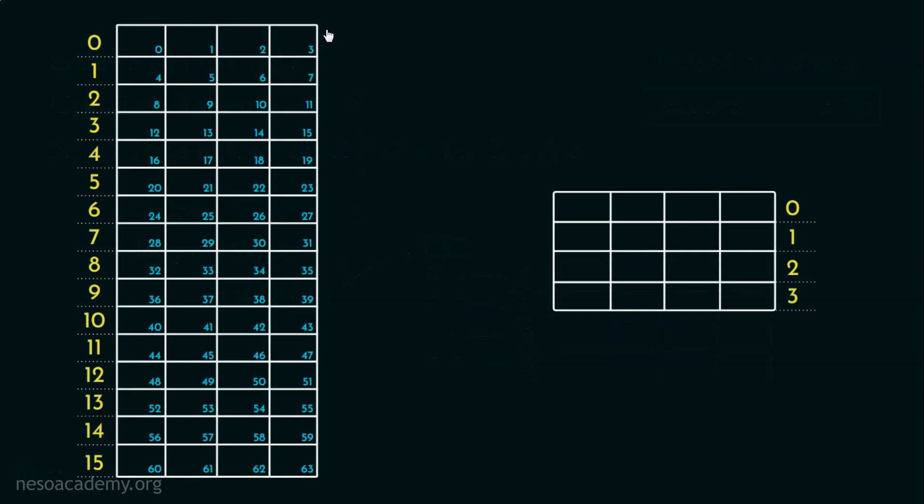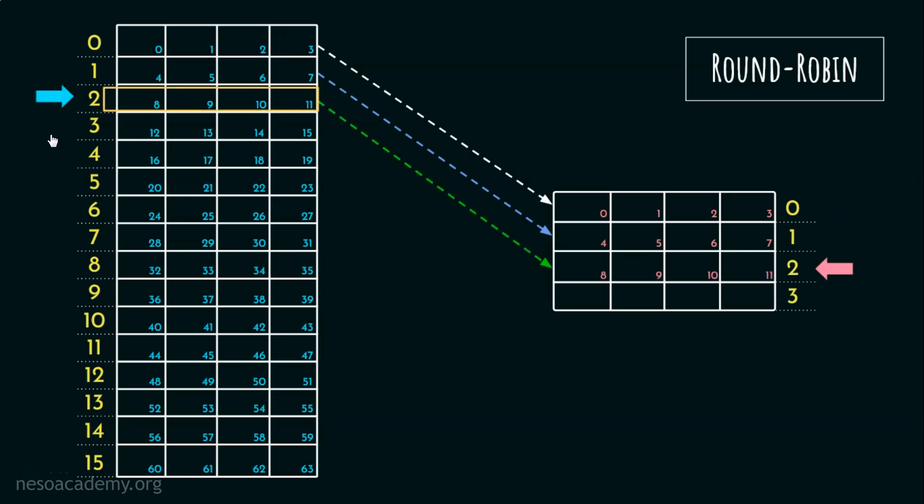It's pretty obvious that all the main memory blocks can't really be assigned to all the cache lines at once. Therefore, we have to perform something called mapping. Now the mapping takes place in round robin manner. So these are the blocks of the main memory and these are the cache lines. The zeroth block will be mapped onto the zeroth line. The first block will be mapped onto the first line. The second block is going to be mapped onto the second line. And the third block will be mapped onto the third line.